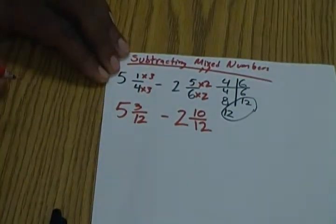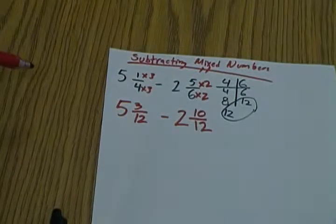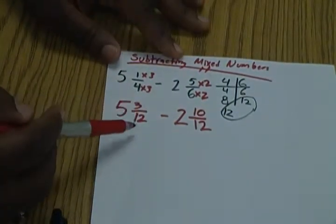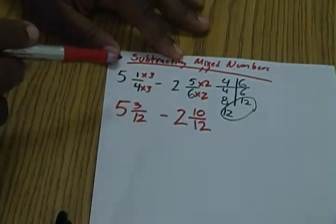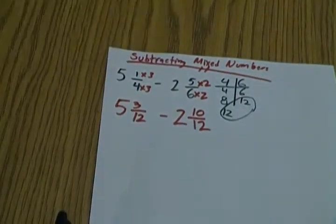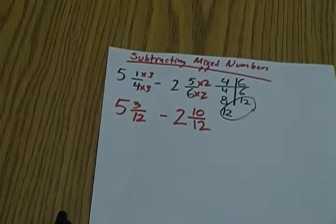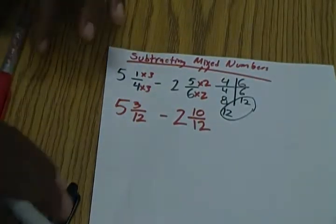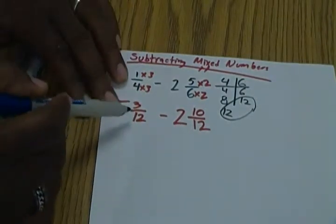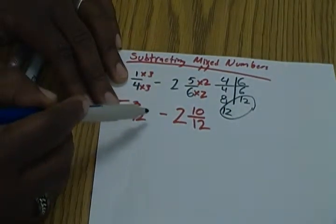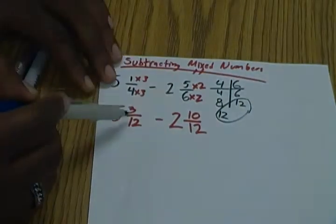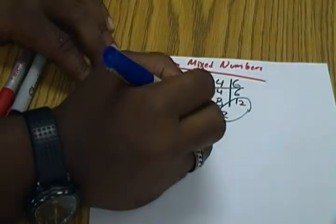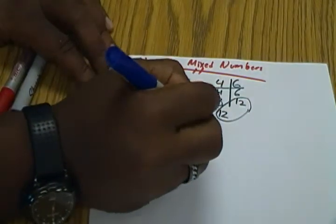This is step two. So now the next part that we have to do is we have to look at our fractions of the mixed numbers. So I asked the children to circle which fraction is bigger. So with our blue marker, we're looking at just the fractions. So I have 3/12 and 10/12. We know that 10/12 is bigger than 3/12.